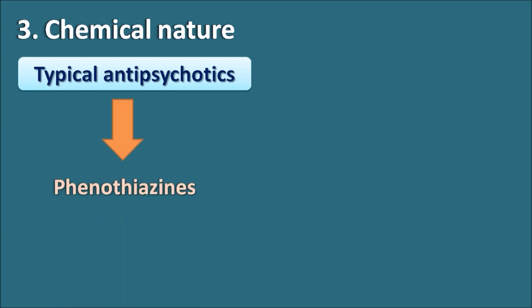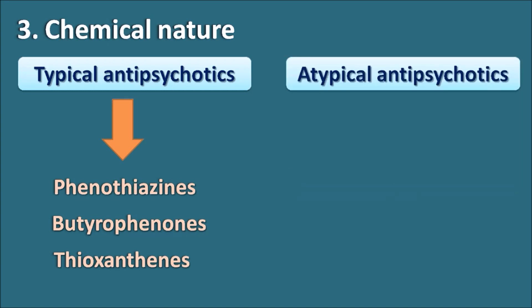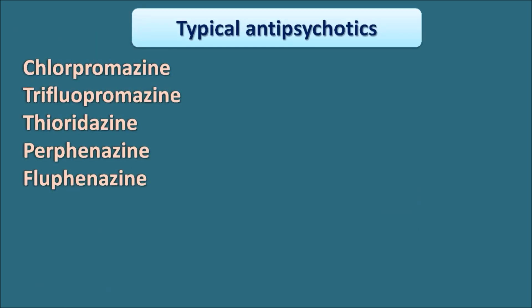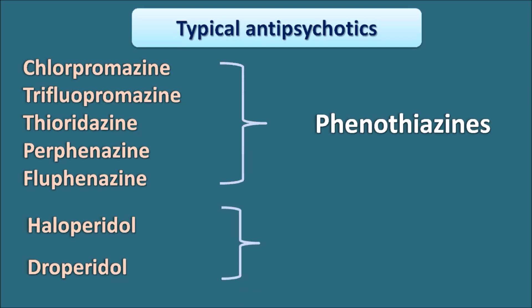The third difference is chemical nature. Typical antipsychotics belong to chemical groups like phenothiazines, butyrophenols, and thioxanthines. For example, chlorpromazine, triflupromazine, thioridazine, perphenazine, and fluphenazine all belong to the phenothiazines — you can see the common suffix '-azine' in all these drugs. Haloperidol and droperidol belong to the butyrophenols.